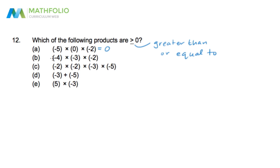Continuing with option B: we now have 12 times negative two. Twelve times two is 24, and a positive times a negative is a negative, so this option equals negative 24.